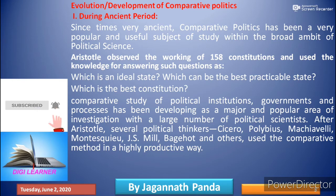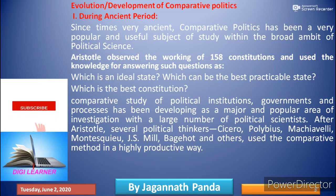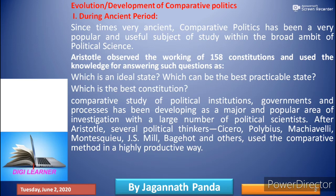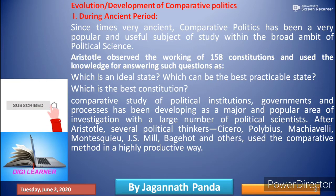Comparative study of political institutions, governments, and processes developed as a major and popular area of investigation for a large number of political scientists. After Aristotle, several political thinkers like Cicero, Polybius, Machiavelli, Montesquieu, J.S. Mill, Wackert, and others used comparative methods in a highly productive way.